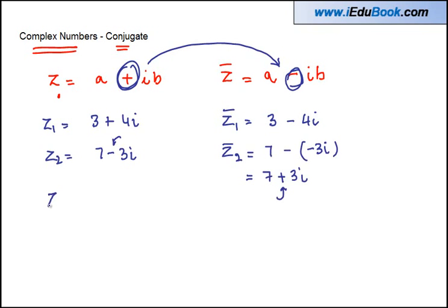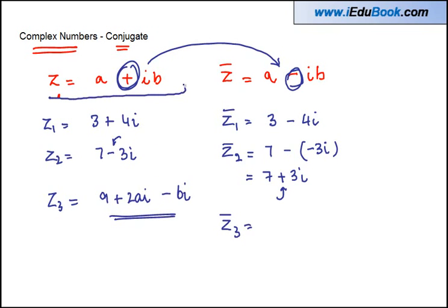Again, let us say you are given Z3 equals 9 plus 2Ai minus Bi, and you have to find out the conjugate of Z3. To do that, first you express this number in the standard complex form.